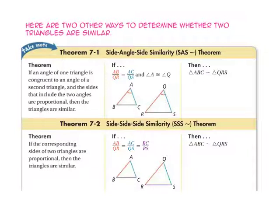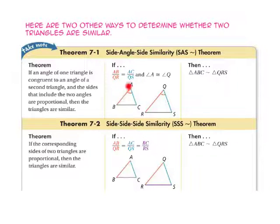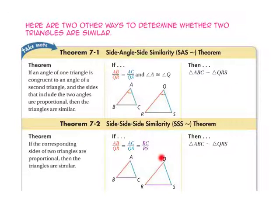Here are two other ways to determine whether two triangles are similar. The side-angle-side similarity theorem states: if one angle of one triangle is congruent to an angle in another triangle and the sides that include those angles are proportional, then the two triangles are similar. The side-side-side similarity theorem states: if the corresponding sides of two triangles are proportional, then the triangles are similar.